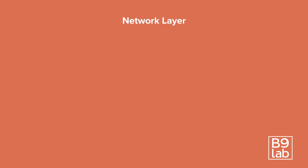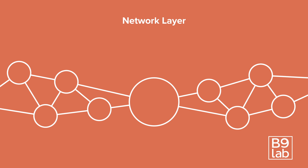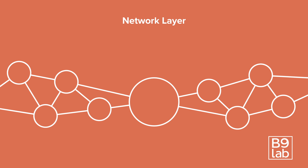Now let's look at the network layer. The network consists of many nodes. In most blockchain networks, all nodes are equal. Every node can keep a full copy of all the blocks.